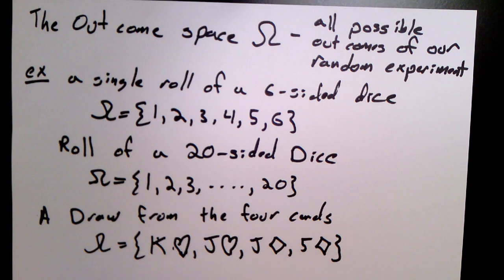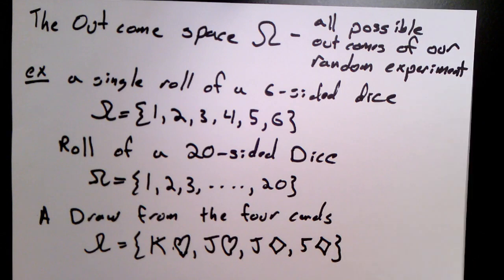Now, once we have these outcome space, we want to start answering questions about them. We want to ask, what's the chance that the king of hearts is drawn? Or, what's the chance that I draw an even, I roll an even number when I roll one of the die? Or, what's the chance that I roll a three and then a five? Now, all these examples of questions are called an event. We're going to ask, what's the chance that some event happens? So let's define that formally now.